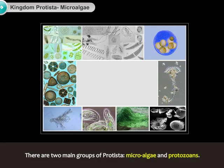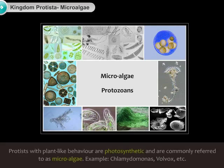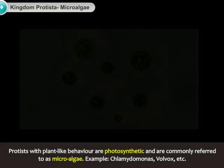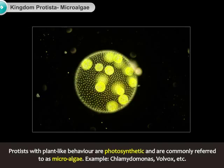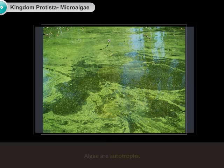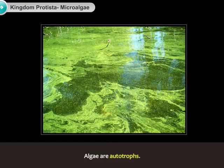There are two main groups of Protista: microalgae and protozoans. Protists with plant-like behavior are photosynthetic and are commonly referred to as microalgae. Examples include Chlamydomonas, Volvox, etc. They occur as single cells, filaments, or colonies. Algae are autotrophs.